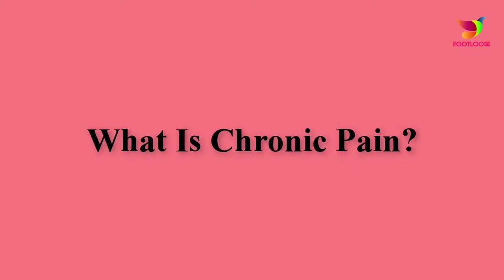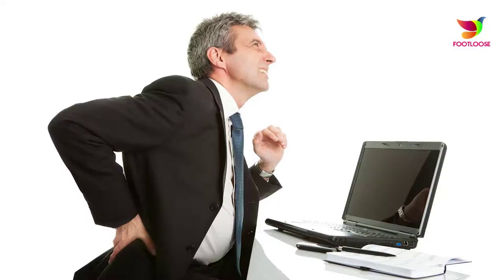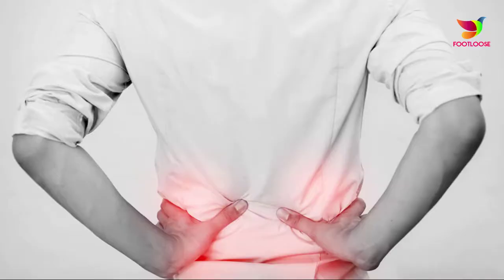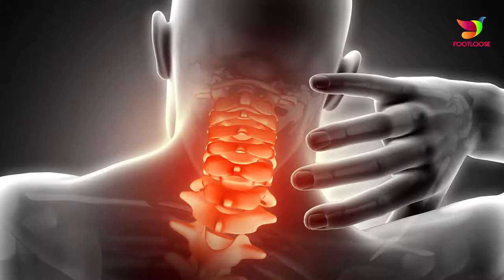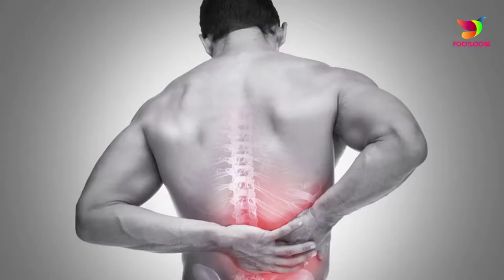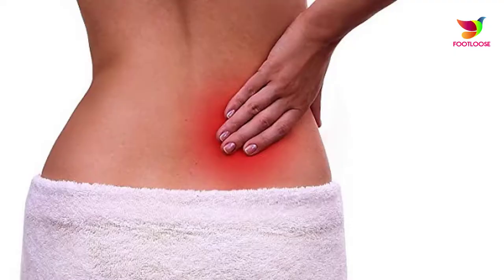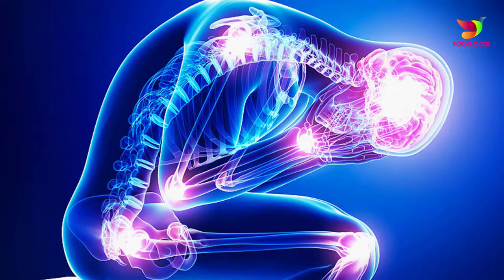What is chronic pain? Chronic pain is defined as pain that lasts at least 12 weeks. The pain may feel sharp or dull, causing a burning or aching sensation in the affected areas. It may be steady or intermittent, coming and going without any apparent reason. Chronic pain can occur in nearly any part of your body, and the pain can feel different in the various affected areas.